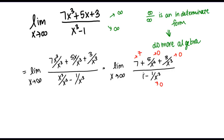In the denominator, I have the constant term 1, which goes to 1 as x goes to infinity. So overall, my numerator is approaching 7 and my denominator is approaching 1, meaning this expression is approaching 7. Therefore, the limit as x goes to infinity of our function equals 7. And what that tells me is that I have a horizontal asymptote on the right-hand side at y equals 7, which we'll see on a graph in just a second.